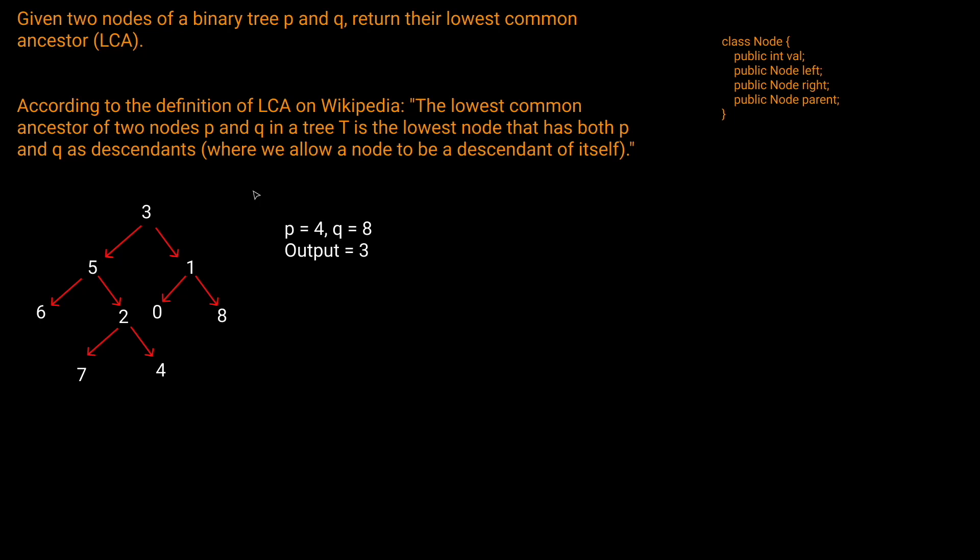Hello and welcome to the Cracking Fang YouTube channel. Today we're going to be solving LeetCode problem 1650, lowest common ancestor of a binary tree 3.